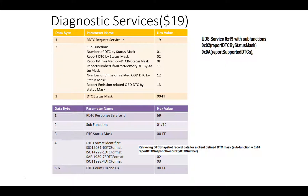For the response, per UDS, 0x40 is added to 0x19 giving 0x59, followed by the sub-function echo and the status mask provided. For example, if the sub-function is 'Report Number of DTCs by Status Mask,' the response also includes the DTC format identifier as the fourth byte — 0x02 for SAE J1939-73 DTC format or 0x03 for ISO format — followed by a two-byte DTC count (high byte and low byte). For a negative response, it is 0x7F followed by the service ID and the NRC.